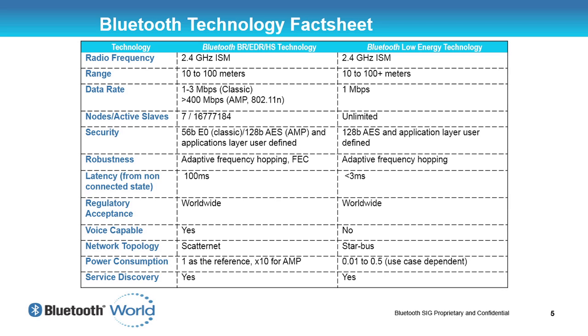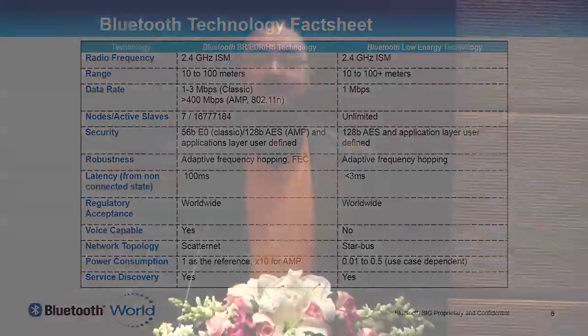In terms of power consumption, if we say Basic Rate uses one reference unit of energy — for example, a chip from a cell phone or computer — then Bluetooth Low Energy uses somewhere between 0.01 and 0.5 units depending on the use case. Some use cases now exist where the battery's shelf-life expiry date is the limiting factor, not the energy consumed by the device. Bluetooth Low Energy uses so little energy that the battery's rated lifetime determines how long the device will work.